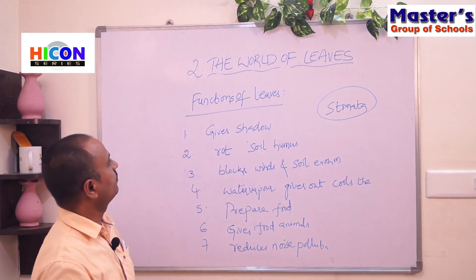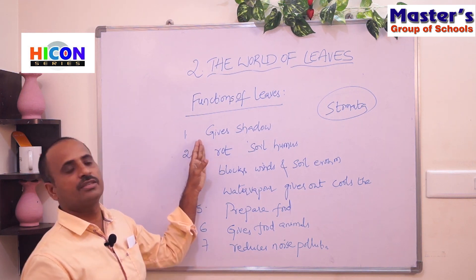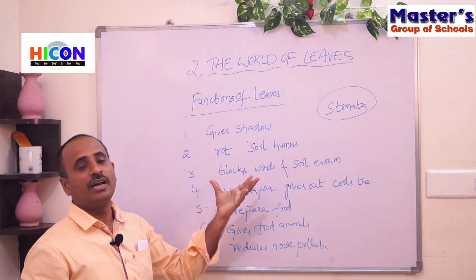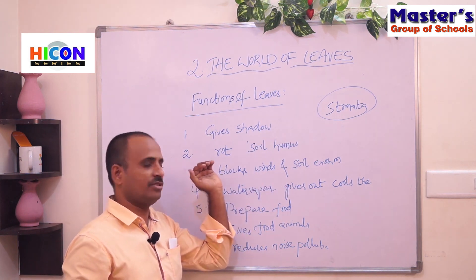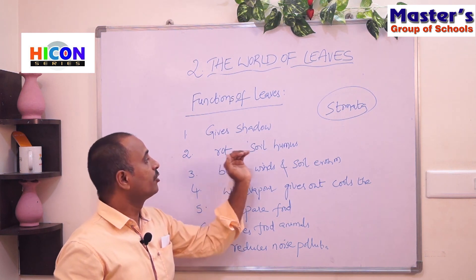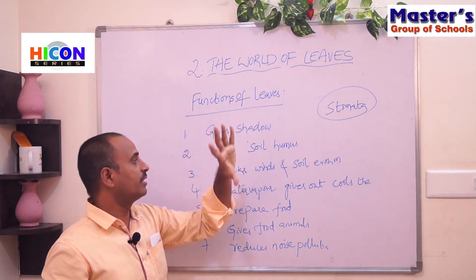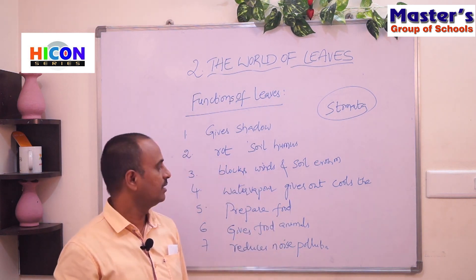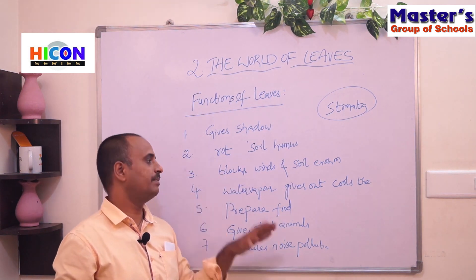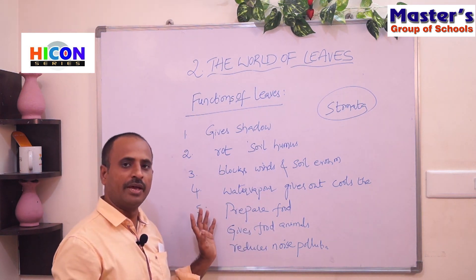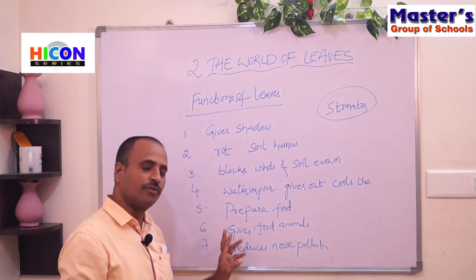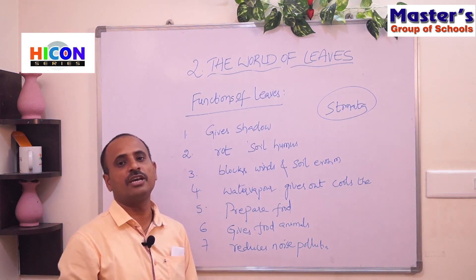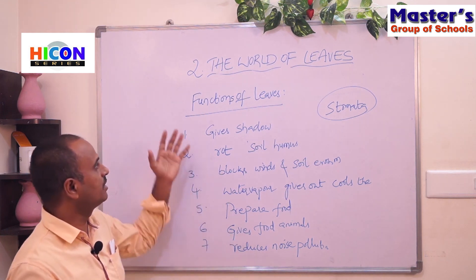To summarize, the functions of leaves are: giving shadow during hot summer days; fallen leaves decomposing and making the soil humus, which helps plants grow healthily; blocking winds and preventing soil erosion; giving out water vapour which cools the surrounding environment; preparing food for the plant through photosynthesis and providing food for herbivores; and reducing noise pollution in our surroundings.